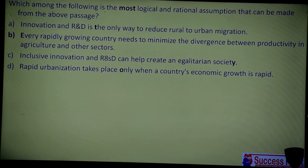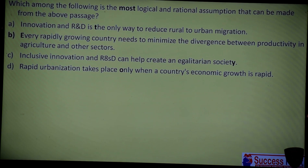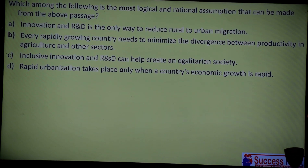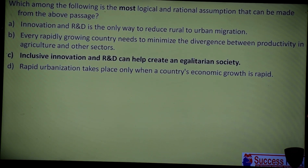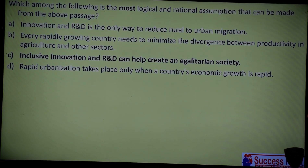Option 3 — Inclusive innovation and R&D can help create an egalitarian society. This is correct: R&D reduces social inequality, increases social equality — that is what an egalitarian society means. Option 4 says rapid urbanization takes place 'only' when a country's economic growth is rapid — the word 'only' is extreme, meaning no other solution exists, which makes it wrong. So the correct option is Option 3.